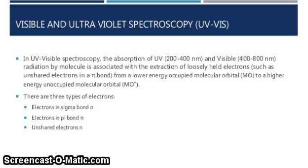There are three types of electrons: first, electrons in sigma bonds (σ); second, electrons in pi bonds (π); and third, unshared electrons (n).